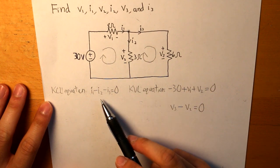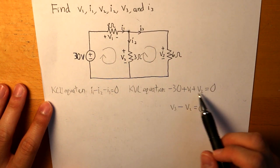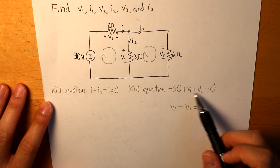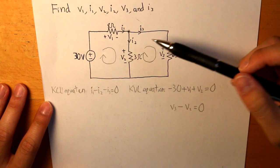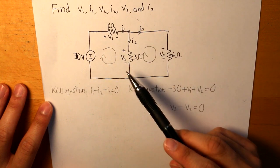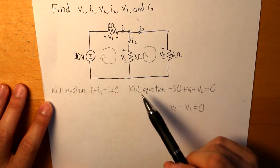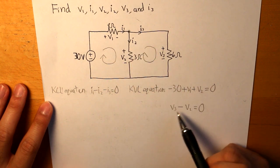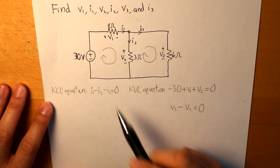And because we want to find the current, then we're going to have to translate these into currents. And to do that, we have to apply Ohm's law here and identify what the currents are in the KVL equations.